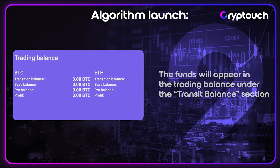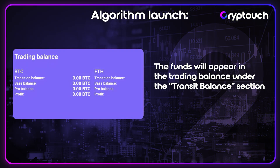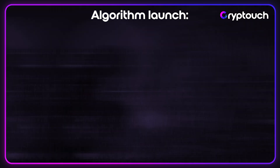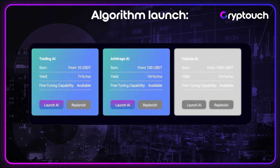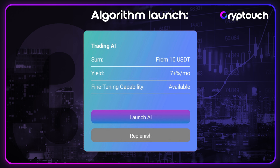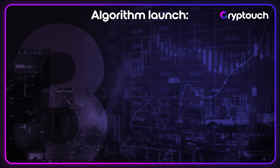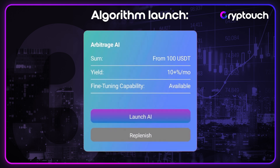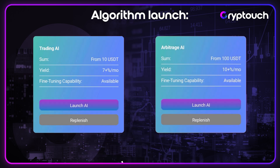The funds will appear in the trading balance under the Transit Balance section. Step 3. Now go to the Algorithms section. Here you have two options: Trading AI with basic settings — a minimum amount of 10 USDT and a yield of 7% per month — or Arbitrage AI with advanced settings — a minimum amount of 100 USDT and a yield of 10% or more. Select the desired algorithm and click Start.